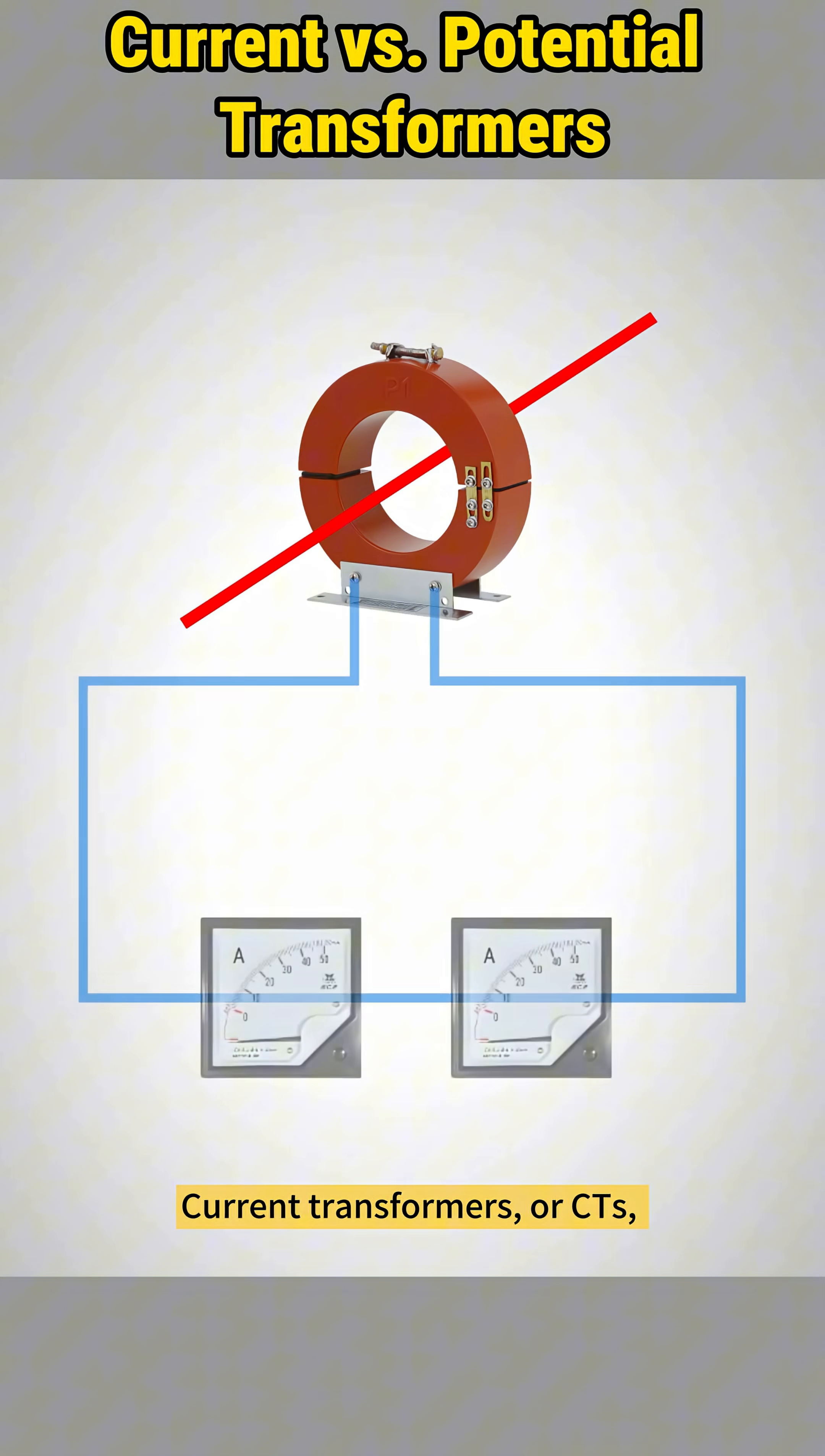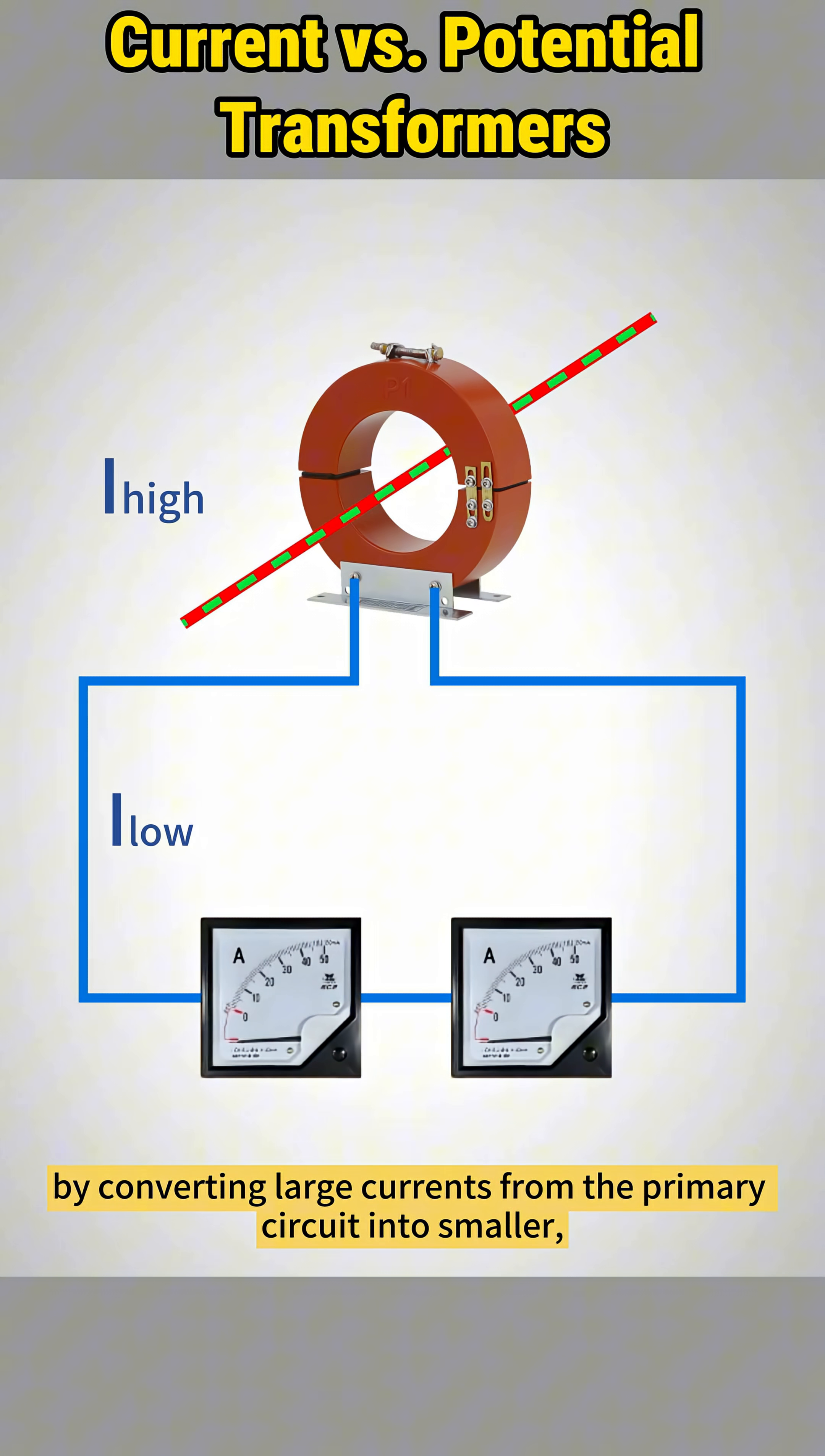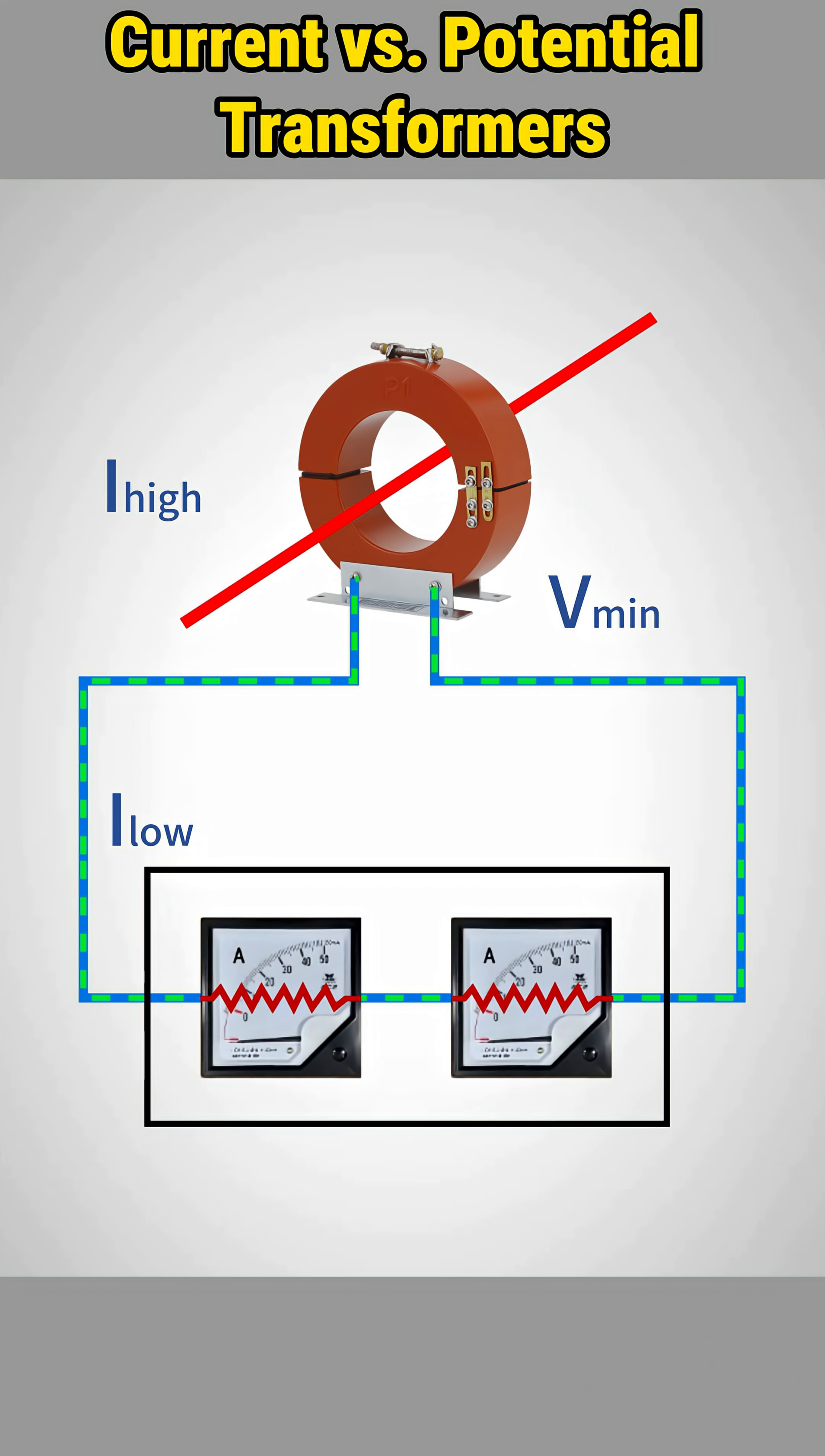Current transformers, or CTs, are primarily designed for measuring current by converting large currents from the primary circuit into smaller measurable ones on the secondary side. Their secondary output voltage is very low and coil resistance is small, approximating a short circuit. And the secondary winding is connected in series with the circuit being measured so that the current can be accurately scaled down without significant voltage drop or power loss.